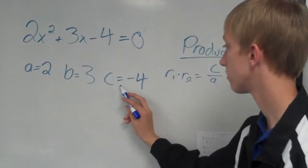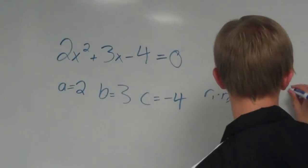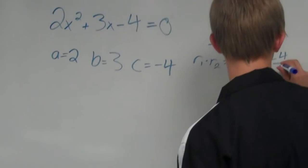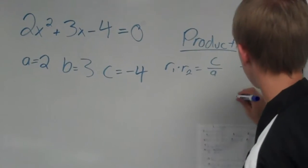Now, c is negative 4, and a is 2, so I'd have negative 4 over 2, which can be reduced down to negative 2.